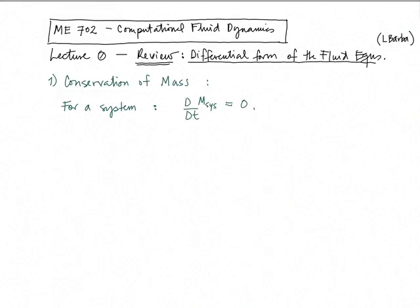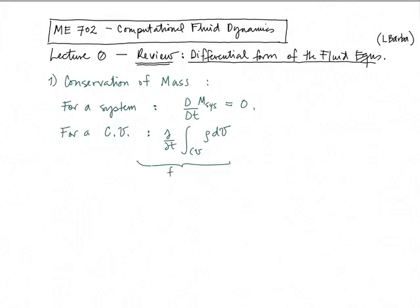We use in fluid mechanics something called the Reynolds transport theorem, which allows us to write equations for a control volume. I'm not going to go over the Reynolds transport theorem, but just remind you that it allows us to write the equation of conservation of mass for a control volume (CV) in integral form. We have the partial derivative with respect to time of the sum of the mass in the control volume, which is the integral over the control volume of rho dV, where rho is the density and dV is an infinitesimal volume element.